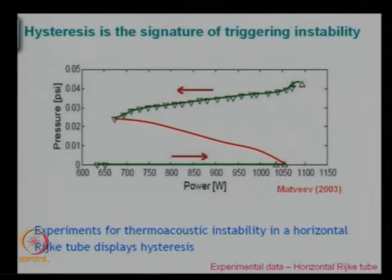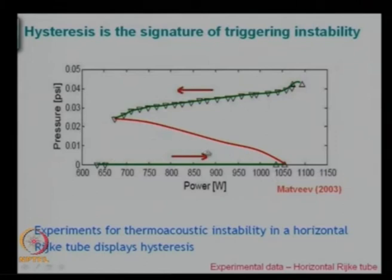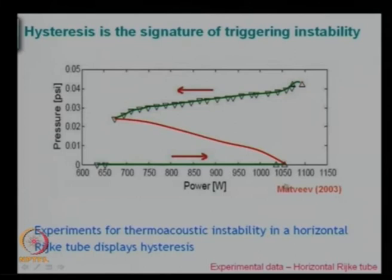If you speak to people working in nonlinear dynamics, hysteresis is a signature of sub-critical bifurcations. In such systems, triggering instability can happen — there is some kind of threshold line. In the region below it, small disturbances will die down; in the region above it, they will grow. The amount of disturbance depends on where you are in this region. You can see there is a big sub-critical zone which is at about 40 percent of the power at the half point — there it is possible that you can trigger the system to instability.